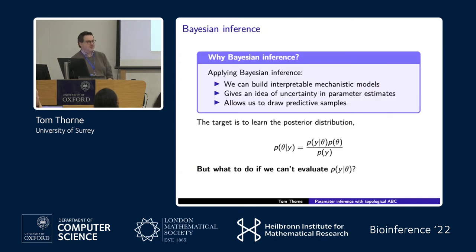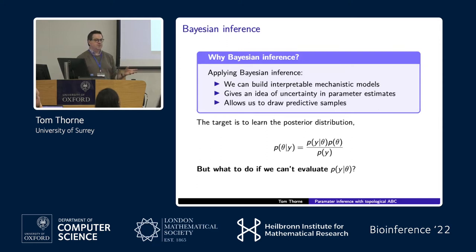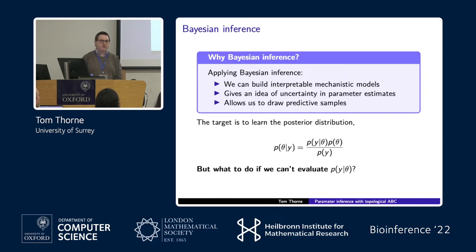We've applied Bayesian inference, which is nice because it allows us to work with mechanistic models like the Anderson-Chaplin model and gives us an idea of the uncertainty in the parameter estimates. We'll see when we look at the results that some of the parameters aren't identifiable, and it also allows us to draw predictive samples to check whether our inferred posterior is realistic. Our task is to learn the posterior distribution of the model parameters given the observed data, which depends on the likelihood p(y | theta).